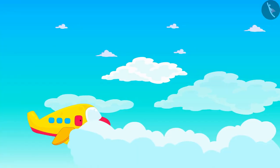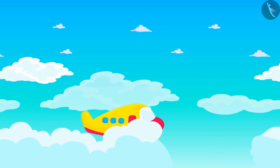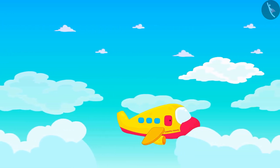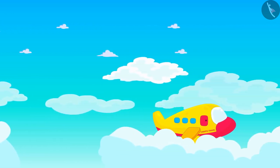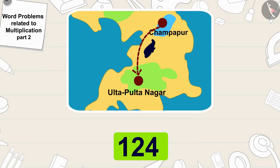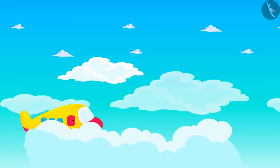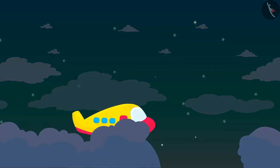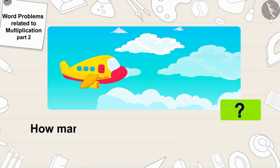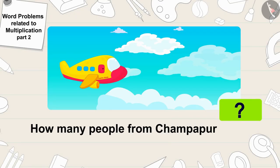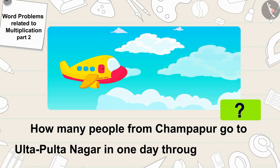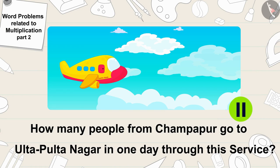Chappu Travels started air service from Champapur to Ulta Pulta Nagar. The Chappu Travel Company takes 124 people from Champapur to Ulta Pulta Nagar every hour through its airplane service. Children, if the airplane service of Chappu Travels is run all day, can you tell me how many people from Champapur go to Ulta Pulta Nagar in one day? If you want, you can stop the video and think about the answer.